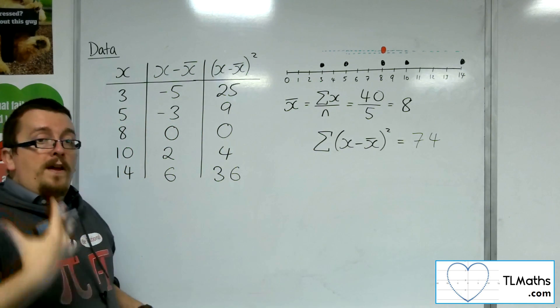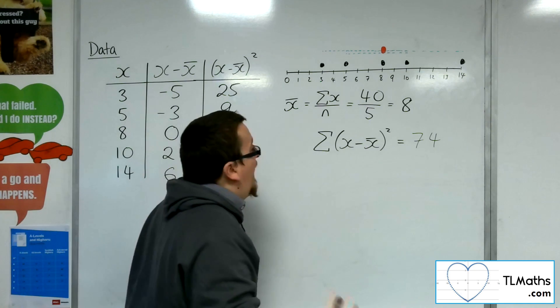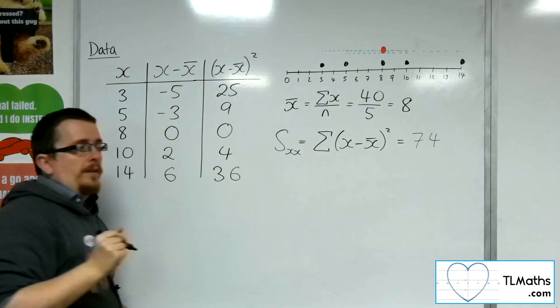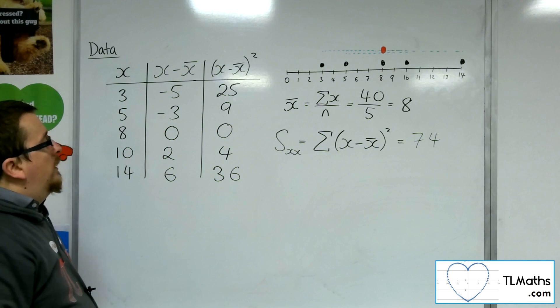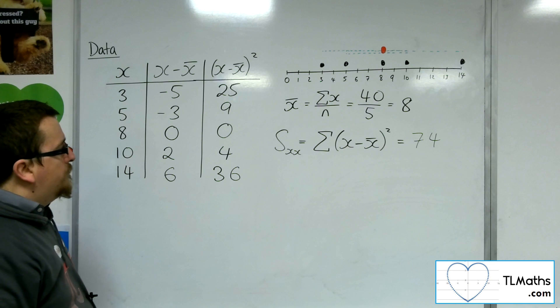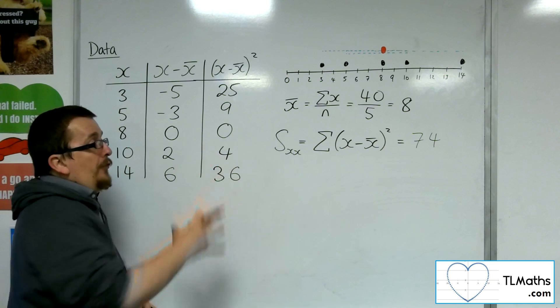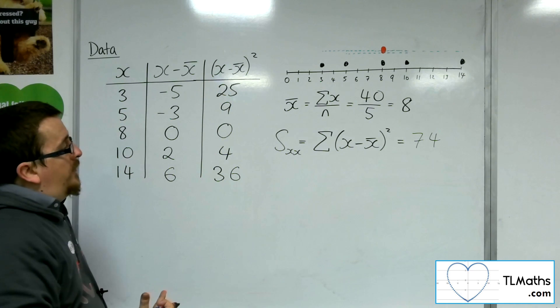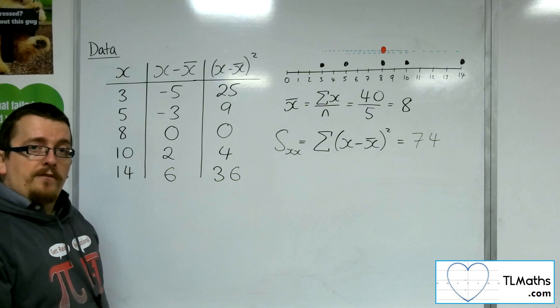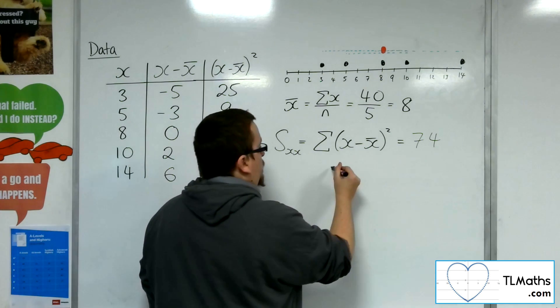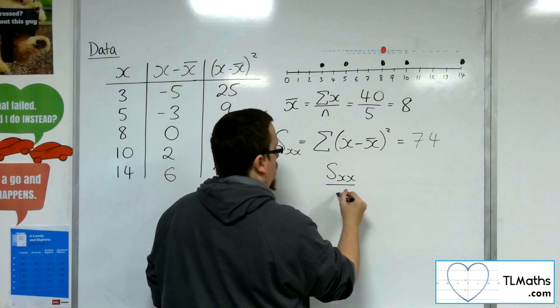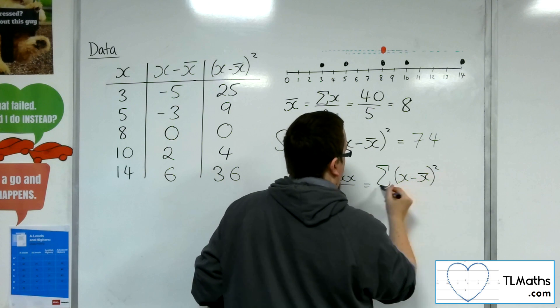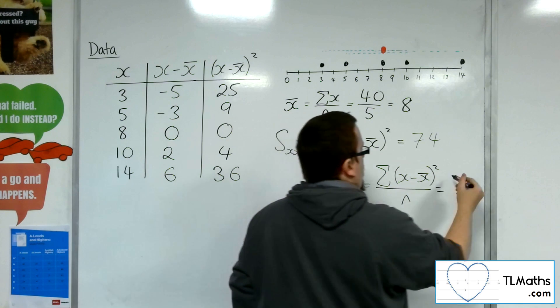So the sum of all the x minus x̄ squared. So what do I get? 25 plus 9 plus 0 plus 4 plus 36 is 74. Now, what we refer to that as is the sum of the squares. That's usually referred to as the sum of the squares, SXX. Now, what I need to do is I need to divide that by 5, divided by n.